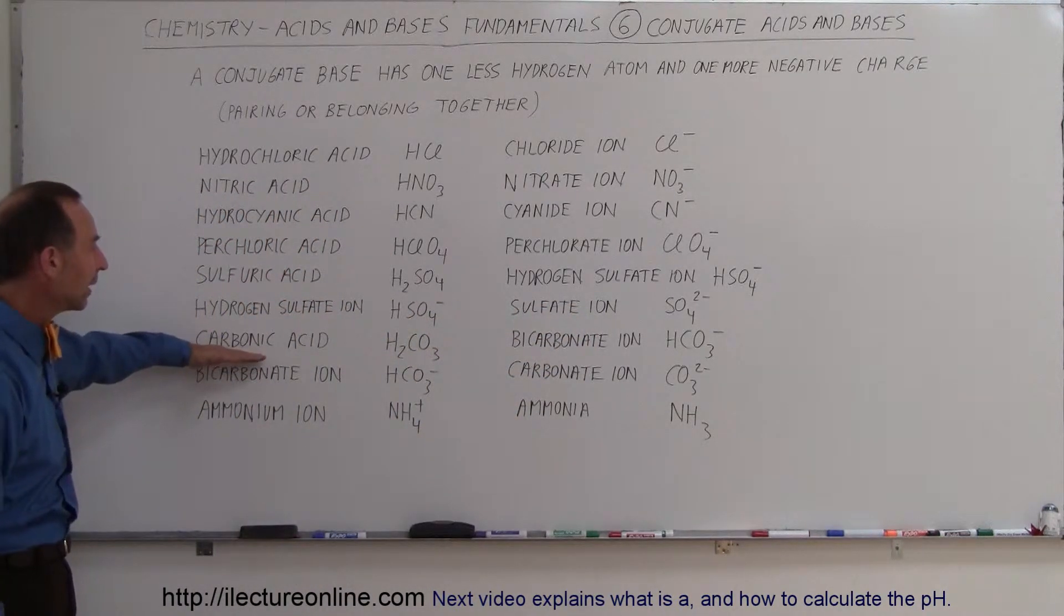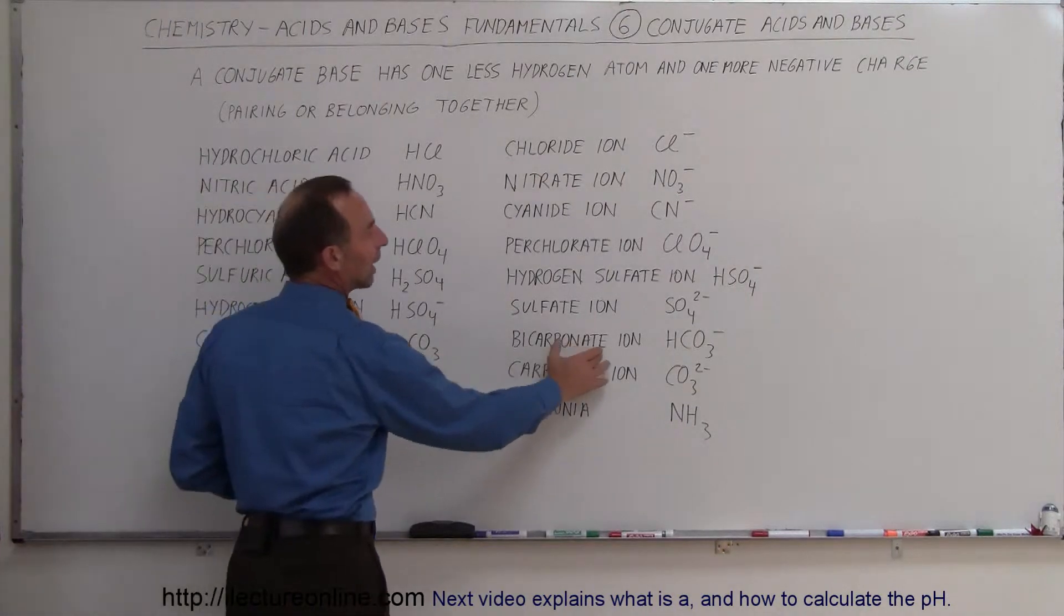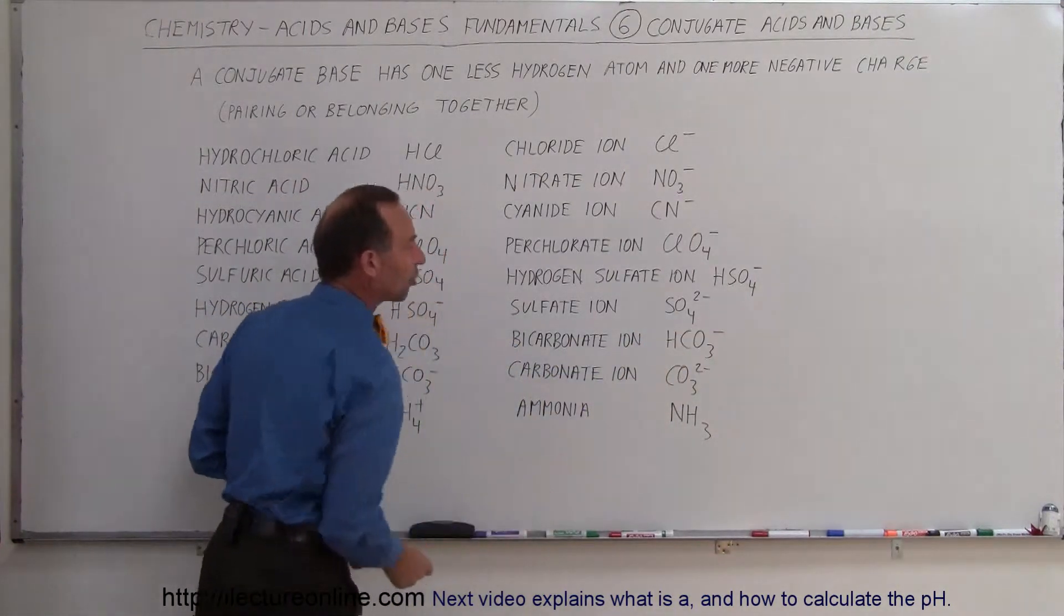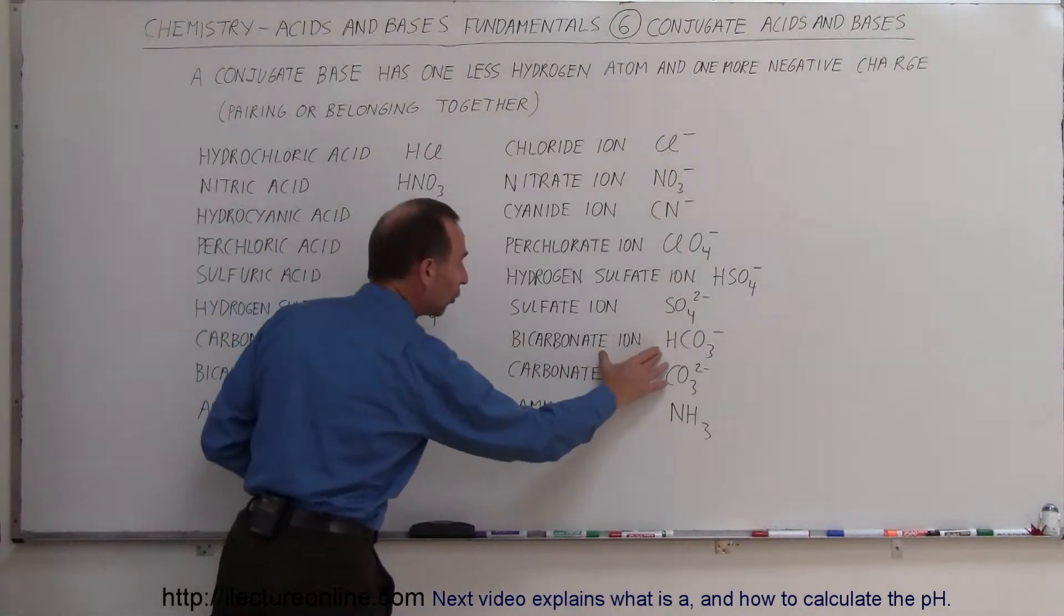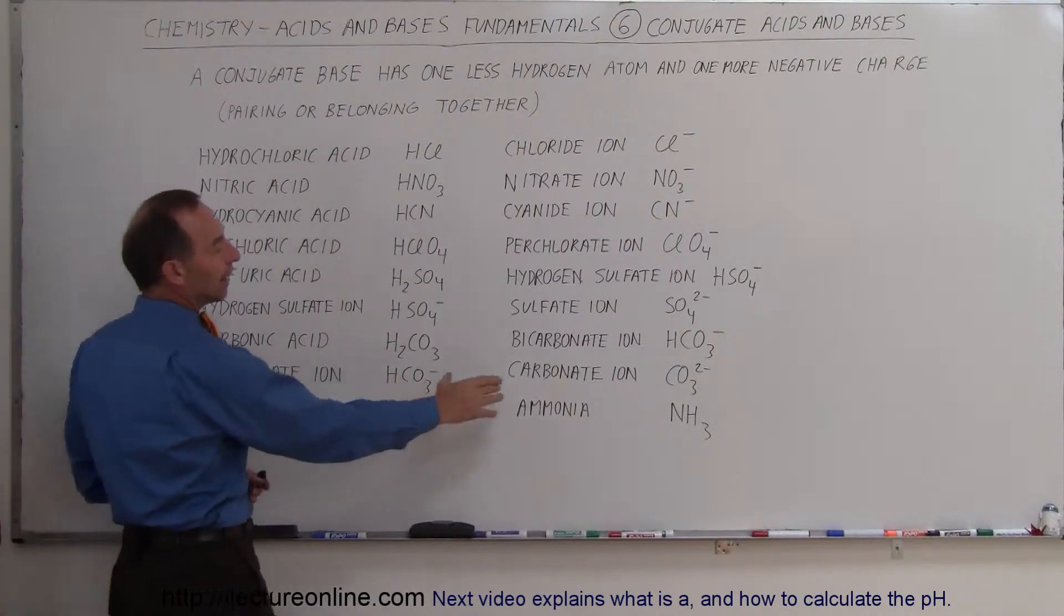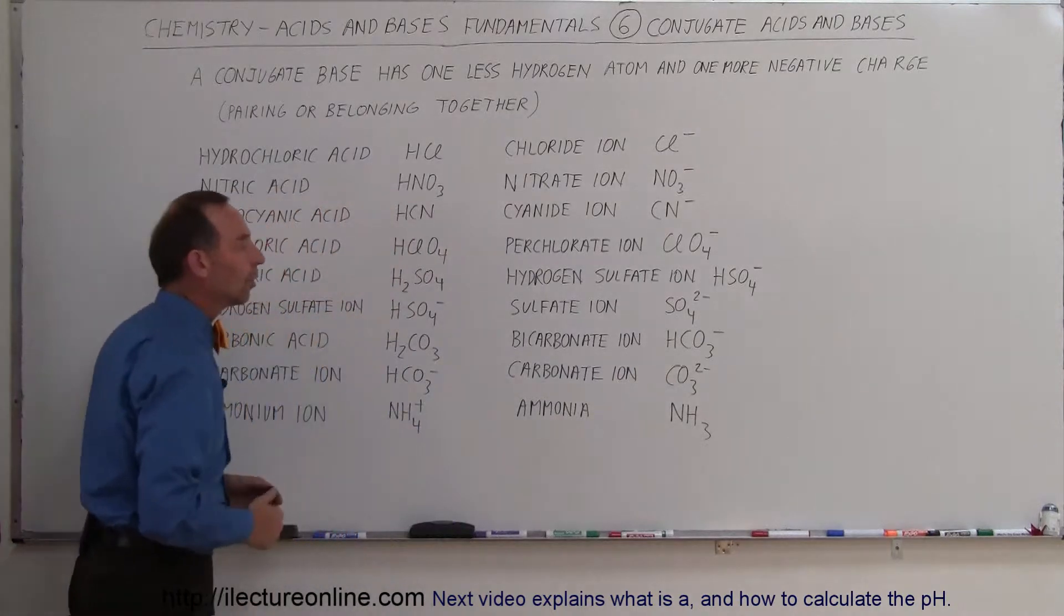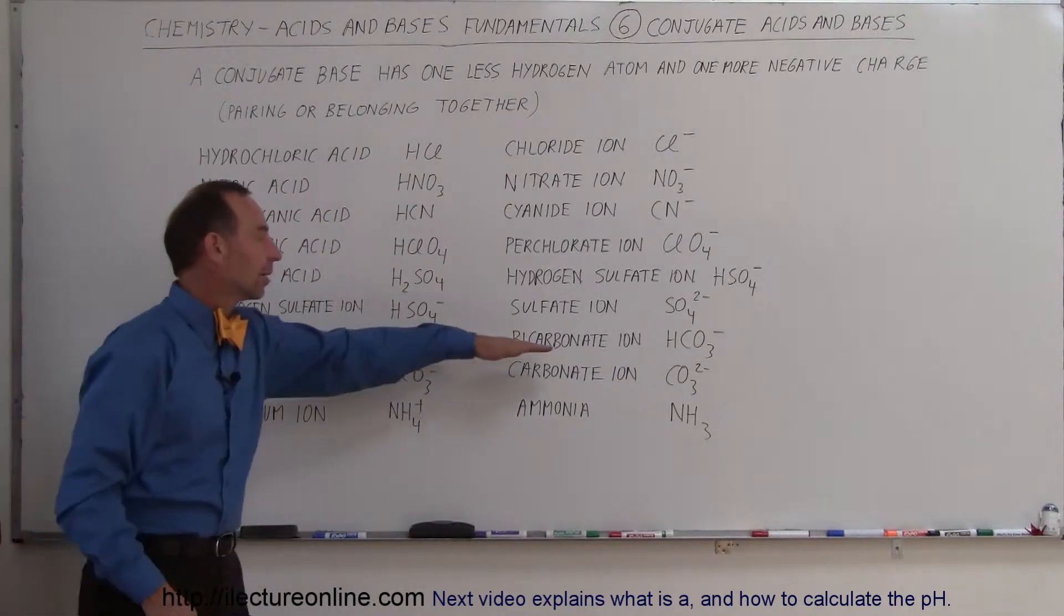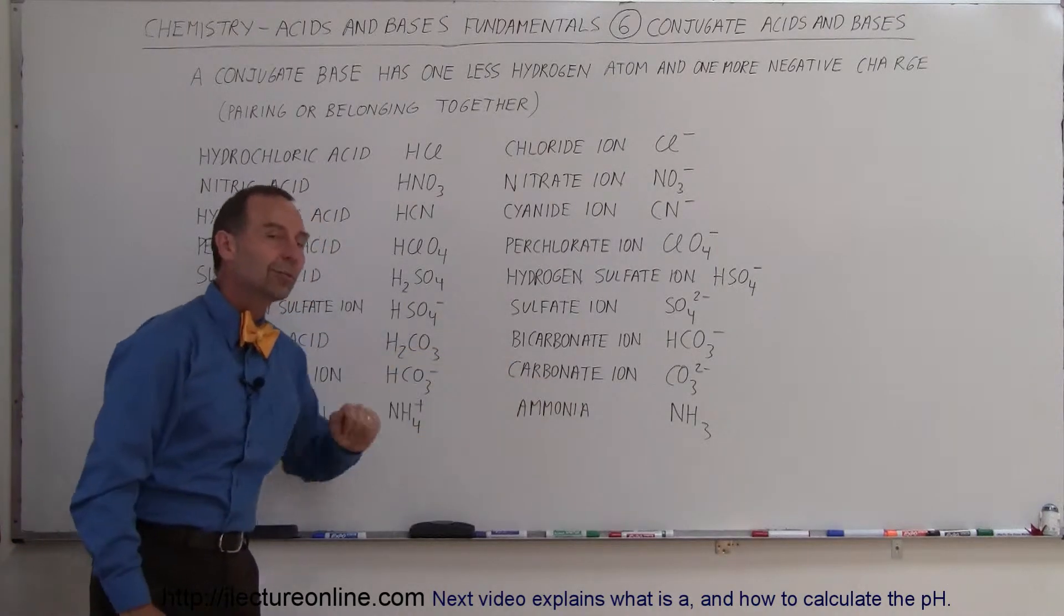Here we have another example like that. We have carbonic acid, which is H2CO3. We have the bicarbonate ion, one less hydrogen, one more negative charge. Since that's a conjugate base to this acid, it can then by itself also form an acid because it can give away its second hydrogen and then have the associated carbonate ion as its conjugate base. So again, you can see that a conjugate base can become an acid and have its own conjugate base in itself.